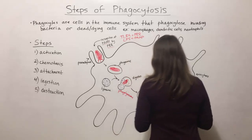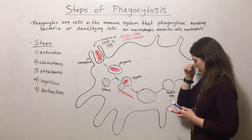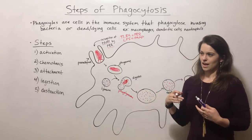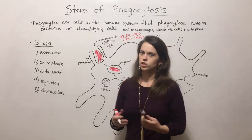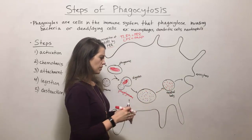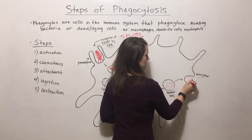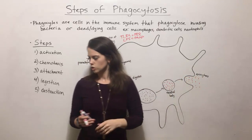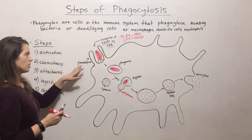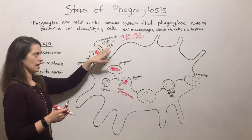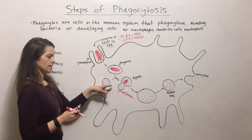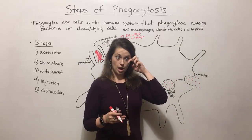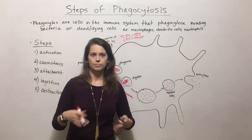Eventually you get something called a residual body, where the only thing left of the original bacterium is non-digestible, indigestible waste with nothing more to break down. That waste is then removed from the cell by the process of exocytosis. So to summarize: pseudopods engulf the bacterium once the PAMP is recognized by a PRR, it's brought in as a phagosome, merges with a lysosome, the digestive enzymes do their work, and the remains are pushed out via exocytosis.